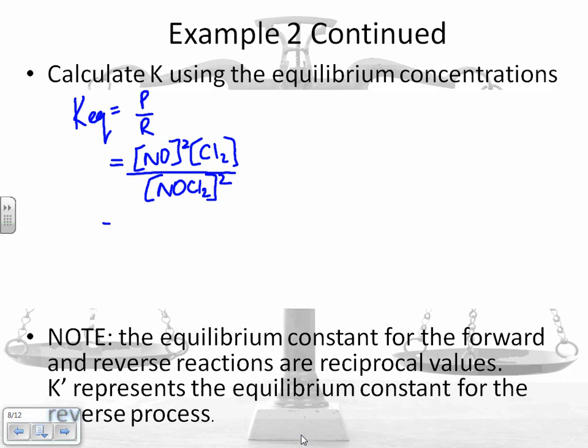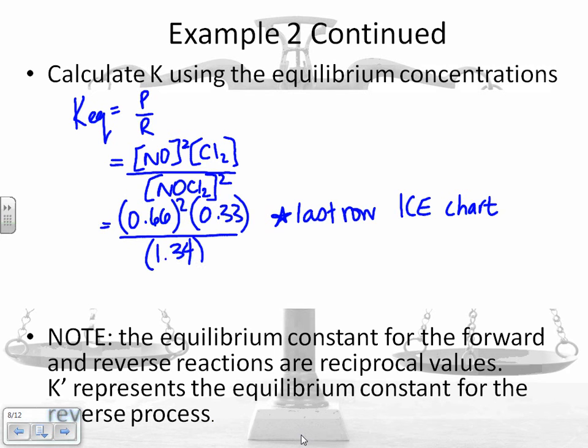Then all I have to do is, because I'm dealing with all these concentrations at equilibrium, I'm going to plug in the last row from my ICE chart. I'm going to plug those numbers in. My concentration of NO was 0.66. I'm going to take that squared, times 0.33, divided by 1.34 squared. When I do that, I get 0.08. So that's a value for KEQ. Remember that your value for KEQ has no units. It's dimensionless.